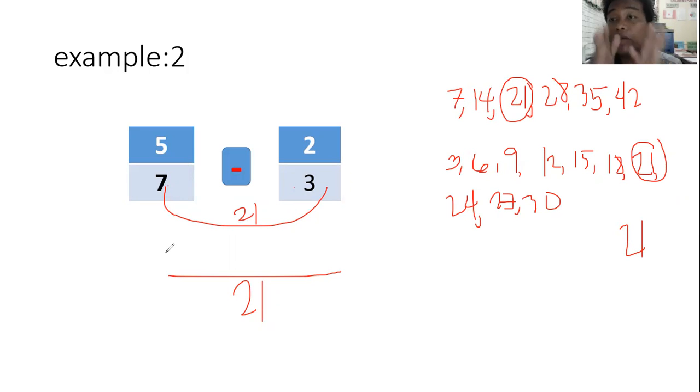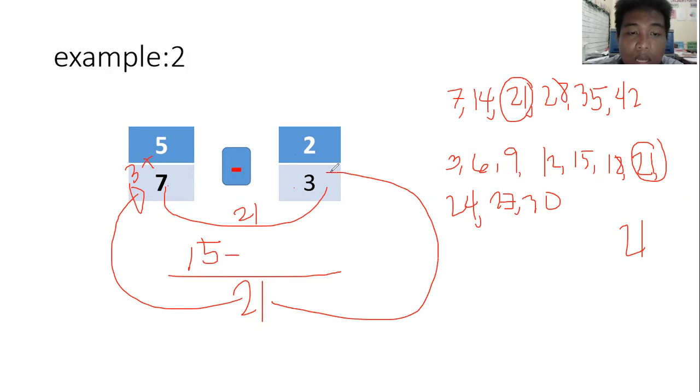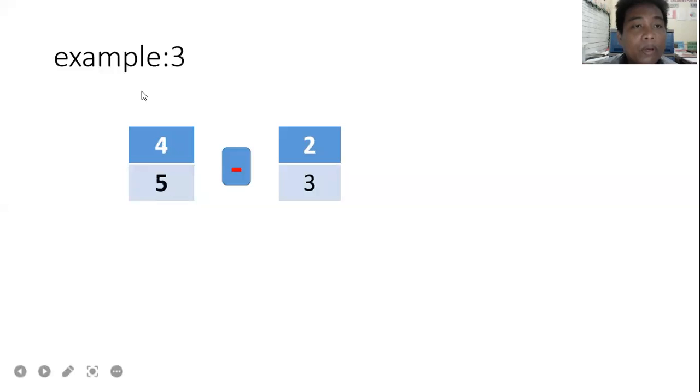But if you just multiply, seven times three equals twenty-one, same LCD. Twenty-one divided by seven equals three, times five equals fifteen. Twenty-one divided by three equals seven, times two equals fourteen. Subtract: copy the denominator twenty-one, then fifteen minus fourteen equals one. So the answer is one-twenty-first.